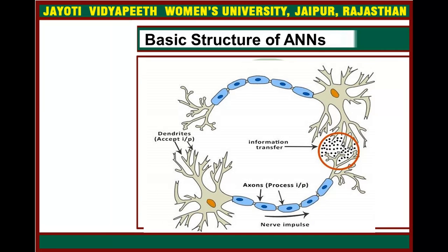Now see this structure — this is the basic structure of the Artificial Neural Network. This shows the information transfer. Nerve impulses travel through axons: the center accepts input and passes it on as a message through nerve impulses. This is collected in the form of information, and that information is transformed. This is the basic structure of the ANN.